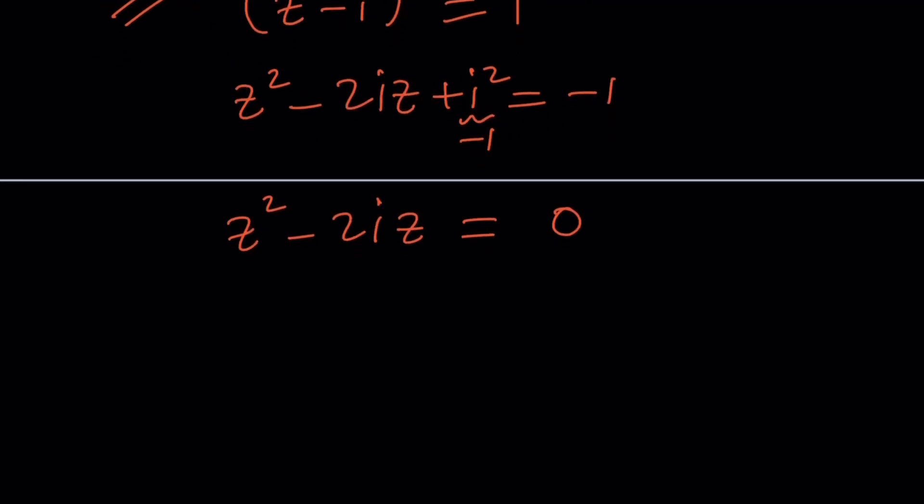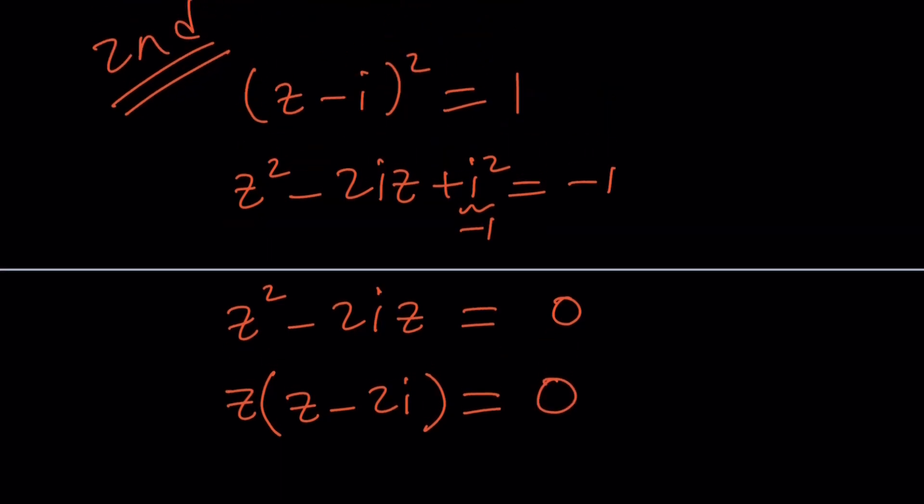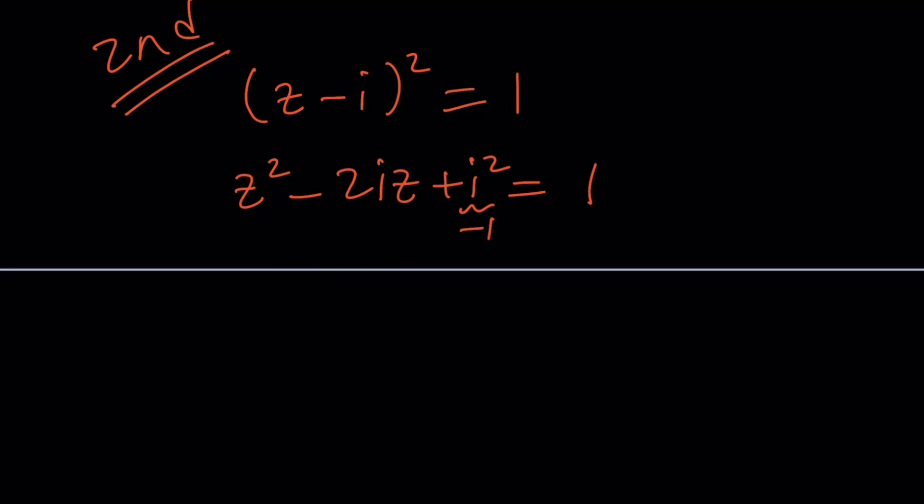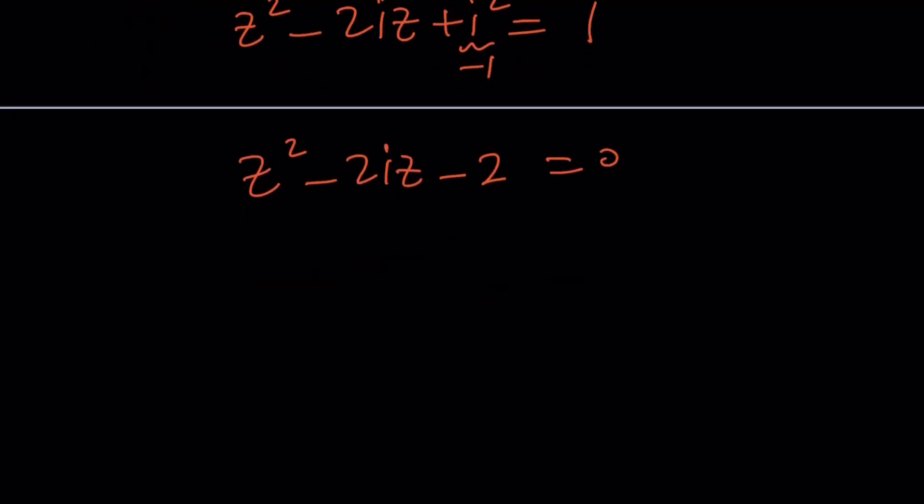And from here, we can basically just factor out a z. And that gives us z(z - 2i) = 0. And by the way, this is supposed to be a one. So we're going to go ahead and subtract it. And that's going to give us a two here. So it's going to be z² - 2iz - 2 = 0.